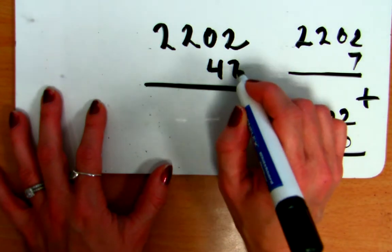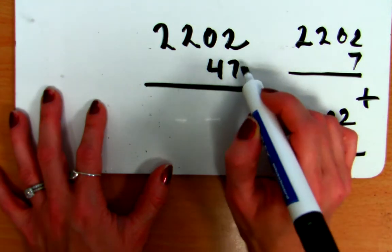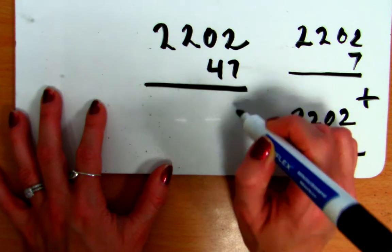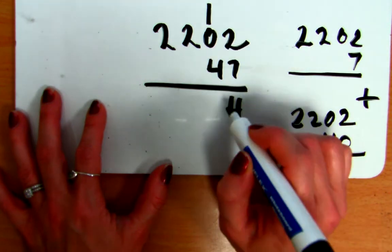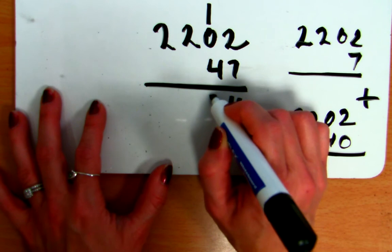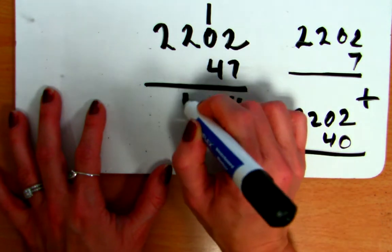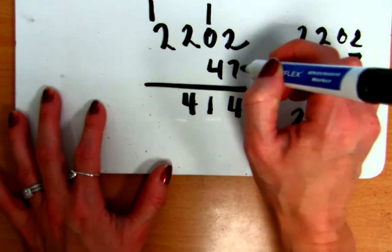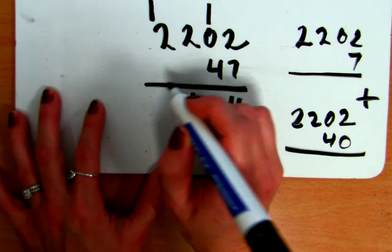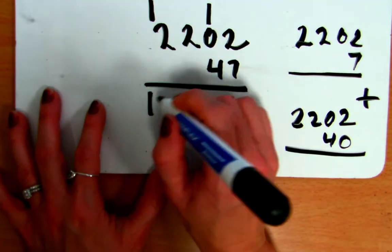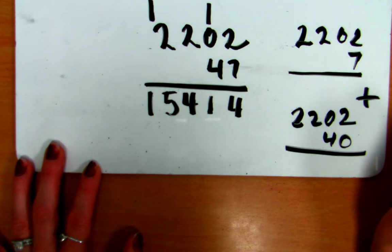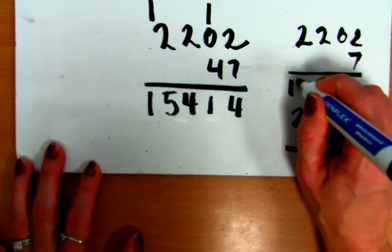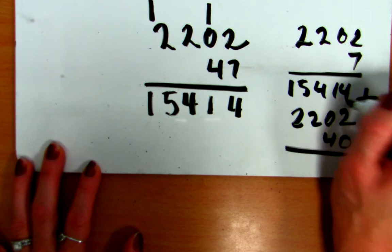So, let's look at what happens. So, I start with 22.02 times 7. I say, okay, well, 2 times 7 is 14. I'm going to carry a 1. 7 times 0 is 0, plus 1 is 1. 2 times 7 is 14 again. Carry a 1. 7 times 2 is 14. Then I have to add that extra 1 in, and so I've got 15. So, that is my 22.02 times 7, as we said over here. 15,414.